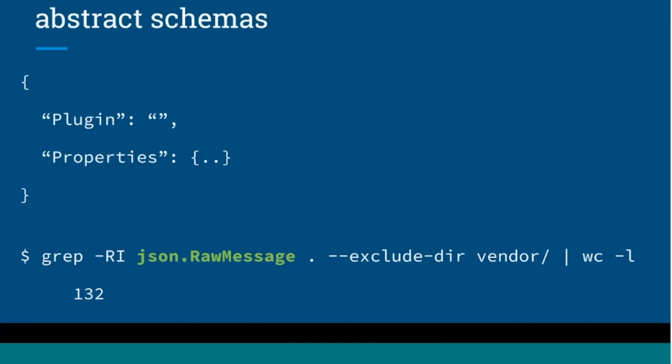The way this has manifested is with extremely abstract schemas. Parts of the system that shouldn't know about different layers are not exposed to them because the schemas are abstracted away. For example, the group plugin should know nothing about AMIs because it's really not responsible for dealing with that — but the instance plugin would need to know that and has a more concrete schema definition. In Go, we take this approach by using JSON raw messages throughout the codebase — there were 132 references when I last checked.